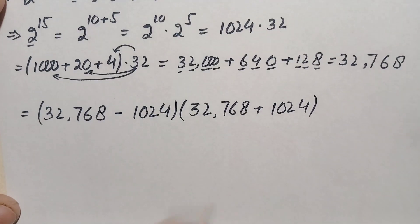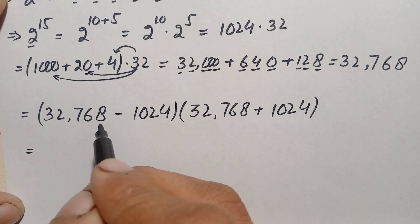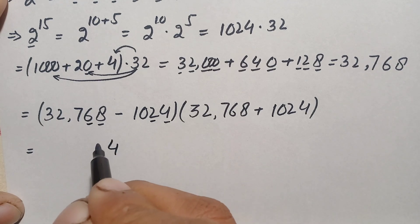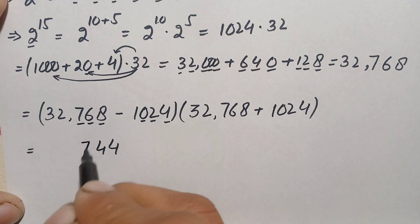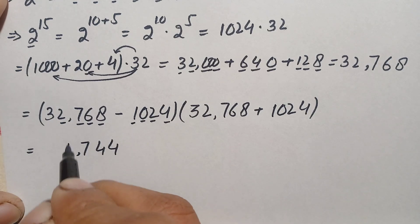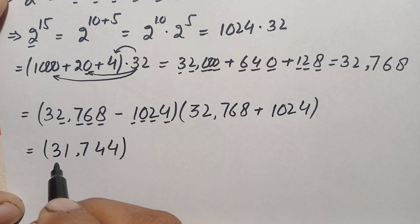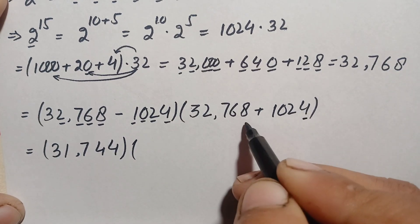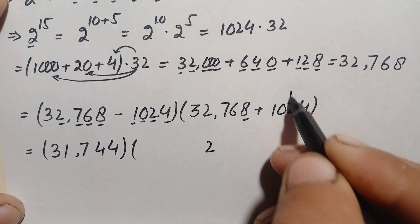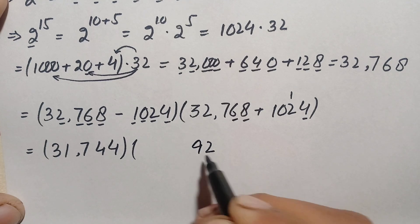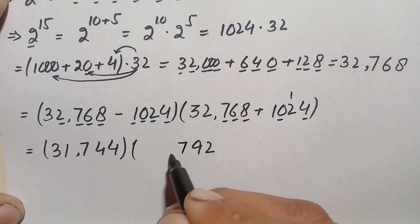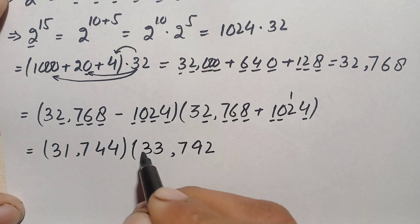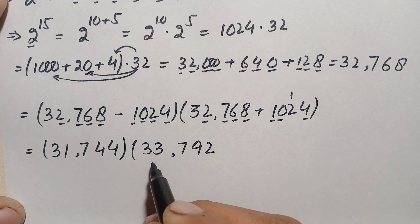We subtract: starting from the ones position, 8 minus 4 is 4; 6 minus 2 is 4; 7 minus 0 is 7; 2 minus 1 is 1; and 3 remains. So 32,768 minus 1024 equals 31,744. For the addition: 8 plus 4 is 12, carry 1; 2 plus 6 plus 1 is 9; 7 plus 0 is 7; 2 plus 1 is 3; and 3. So 32,768 plus 1024 equals 33,792.